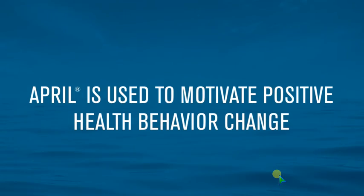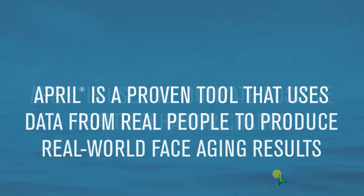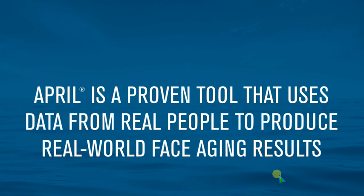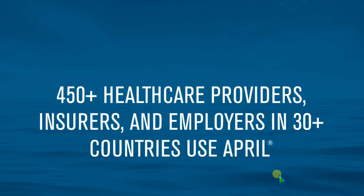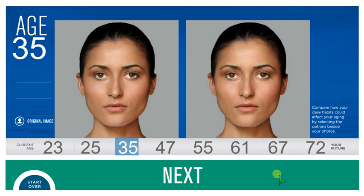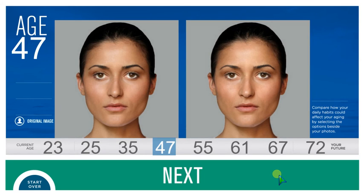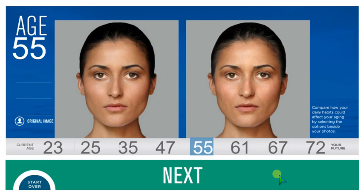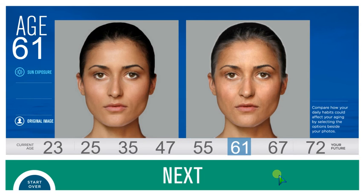The next few screens can be used to deliver your specific messages to users during the aging process. The aging process usually takes less than 20 seconds. When the aging is complete, April shows the pattern of natural aging on the right, from current age to age 72, compared to the original input photo on the left.